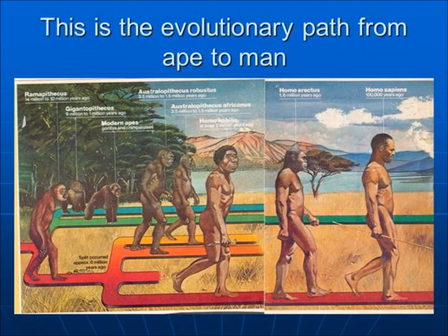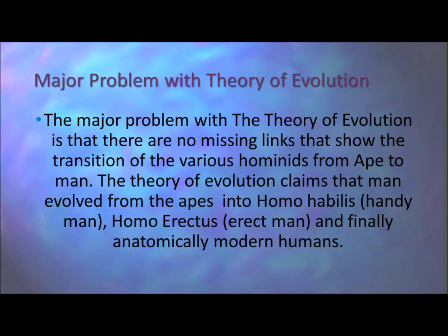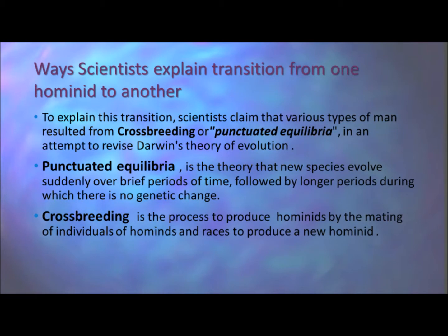From Homo erectus, erect man, and finally to anatomically modern humans — the people we call man today. The major problem with this theory is that scientists have not found skeletal remains that illustrate the transition of one hominid into the next. To explain this transition, scientists claim that various types of man resulted from cross-breeding or punctuated equilibrium, in an attempt to revise Darwin's theory of evolution.